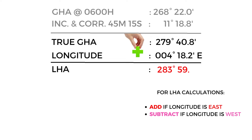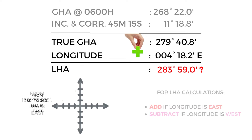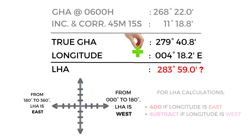Using that rule, our LHA is 283° 59.0'. Now let's consult another rule for its sign. If our LHA is between 000° and 180°, give it a westerly sign; if the LHA is between 180° and 360°, give it an easterly sign.